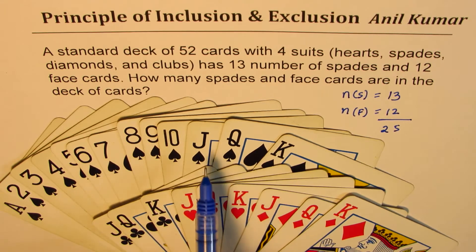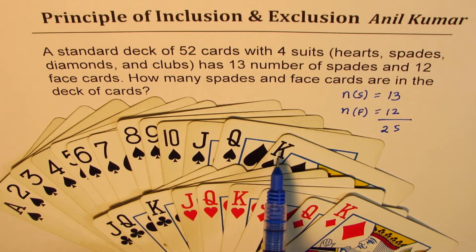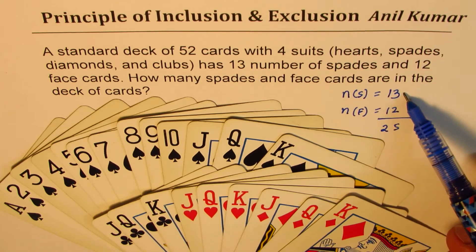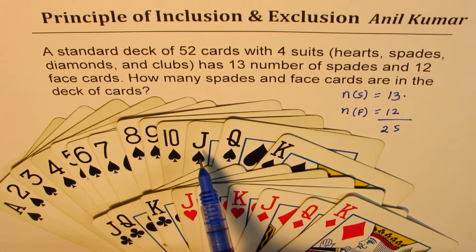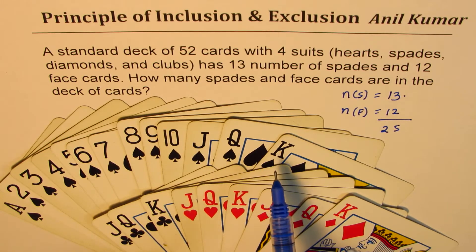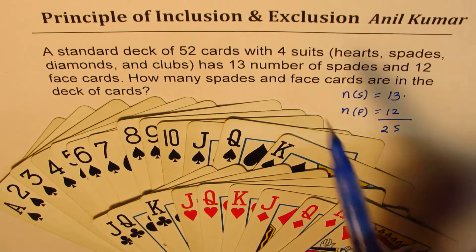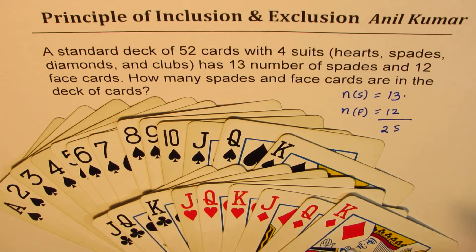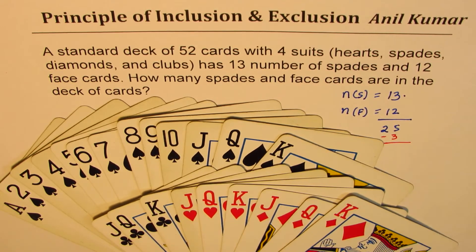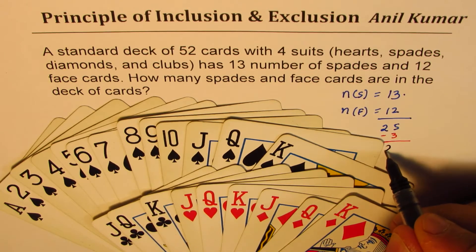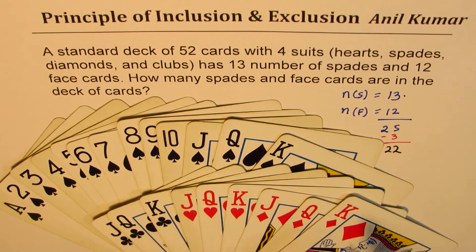The reason is that these face cards of spades have been counted in the 13 and also in the 12. Actually it is only 9 plus 3. Since they have been counted twice — that means they have been included twice — we need to exclude them. So we take away 3 to get the right number, which is 22. You can count these cards: they are 22 in number.